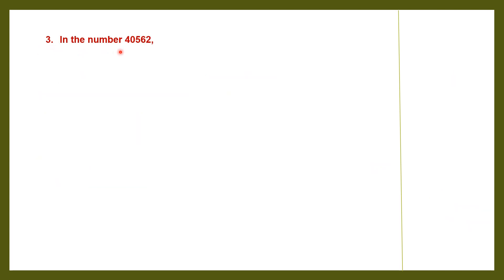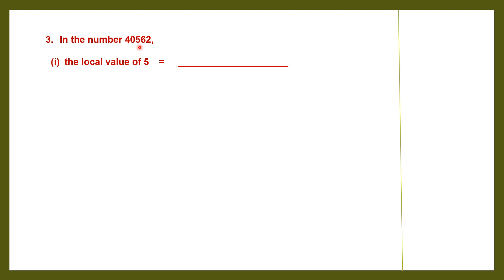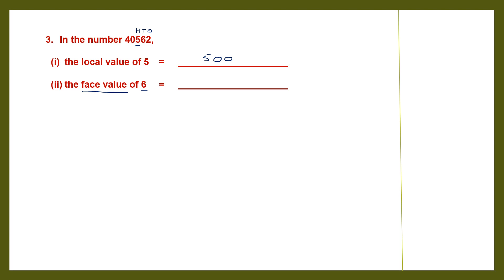Question 3: in the number 40,562, we have to find the local value of 5. Remember, local value is the same as place value. 1s, 10s, 100s — 5 is in the 100s place. So 5 into 100 is 500. Then we have to find the face value of 6. Face value is the value of the digit as you see it — it's the same number. It does not depend on the position of the digit in the number. So the face value of 6 will simply be 6, in whichever position it is.